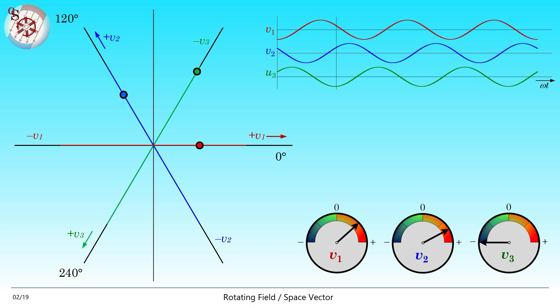If we add those three voltages located in space, we get the voltage space vector. So the voltage vector is nothing more than the addition of the red, blue and green dot.